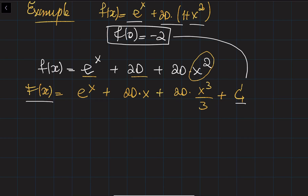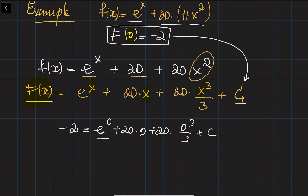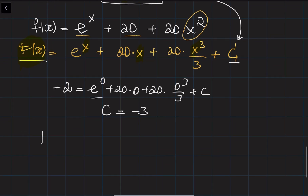To find C we use the initial condition F(0) = -2. Substituting x = 0: minus 2 equals e to the 0 plus 20 times 0 plus 20 times 0 cubed over 3 plus C. Since e to the 0 is 1, we get minus 2 equals 1 plus C, so C equals minus 3. Therefore the antiderivative is e to the x plus 20x plus (20/3)x cubed minus 3.